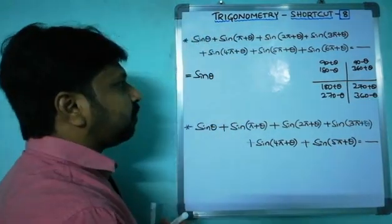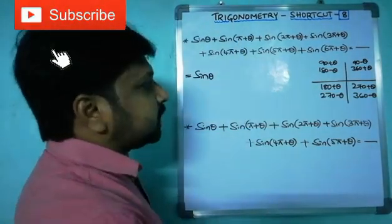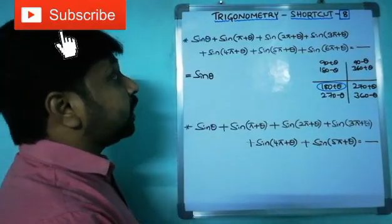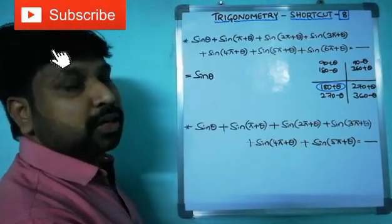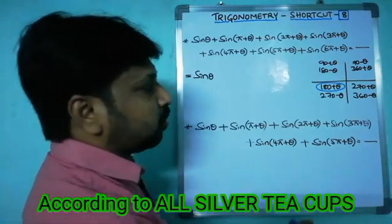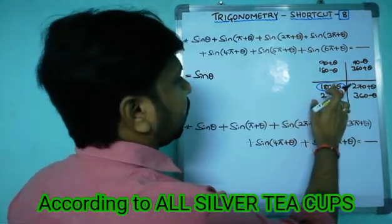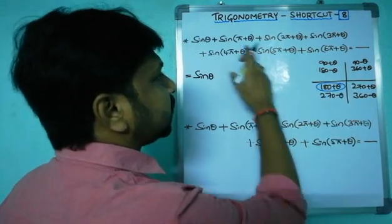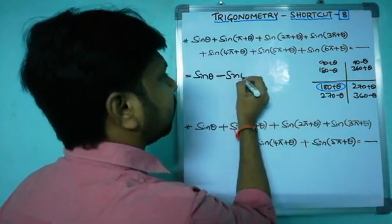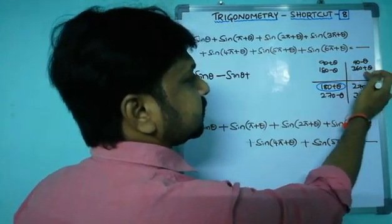Now, 180 plus theta is in the third quadrant. In the third quadrant, sin will always be negative, because in the third quadrant tan and cot only are positive, according to the 'All Silver Tea Cups' rule. So sin(180 plus theta) gives minus sin theta. Next, sin(2pi plus theta) means 360 plus theta, which is the first quadrant, where sin is positive.